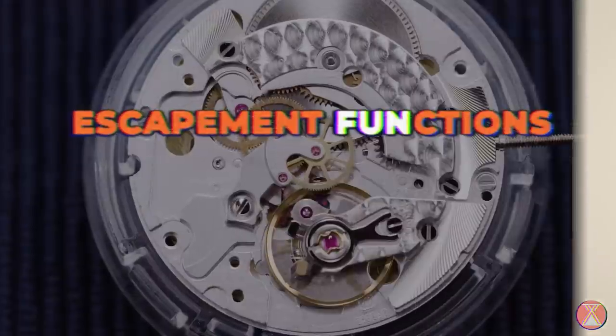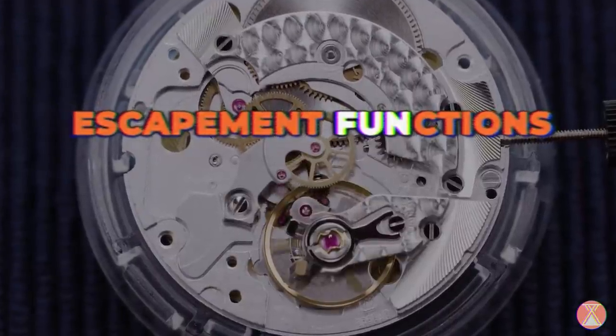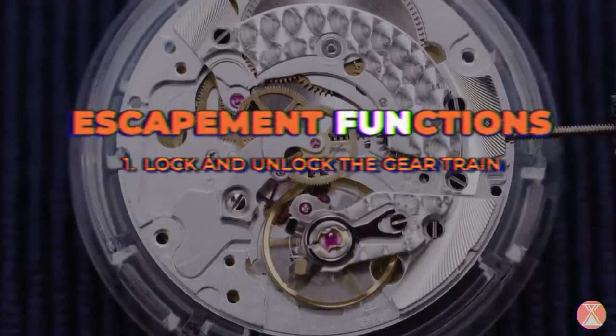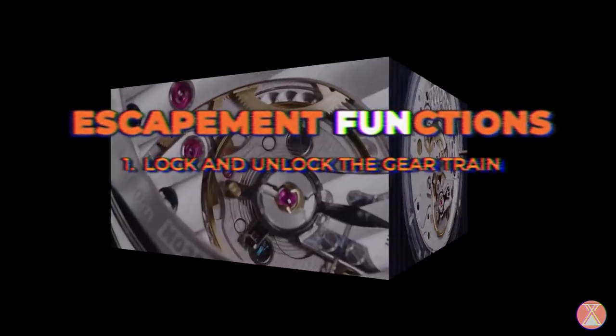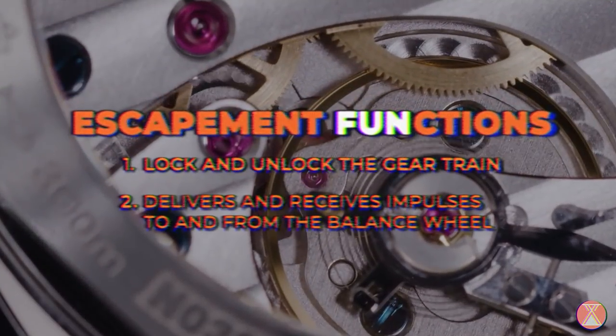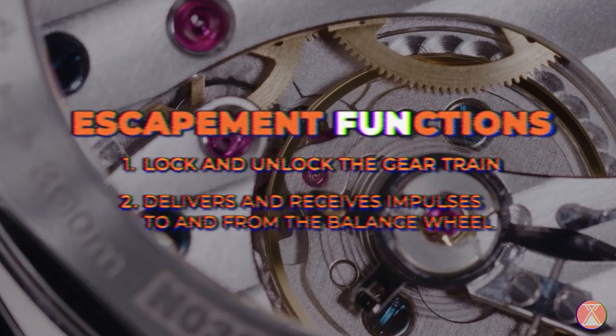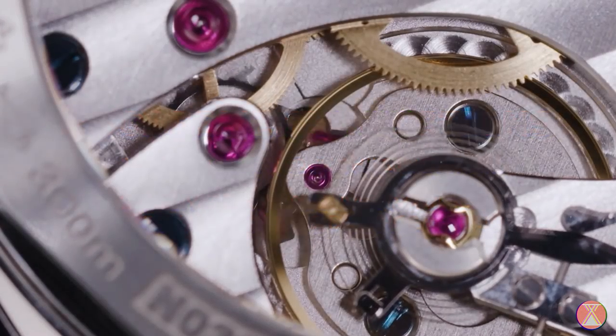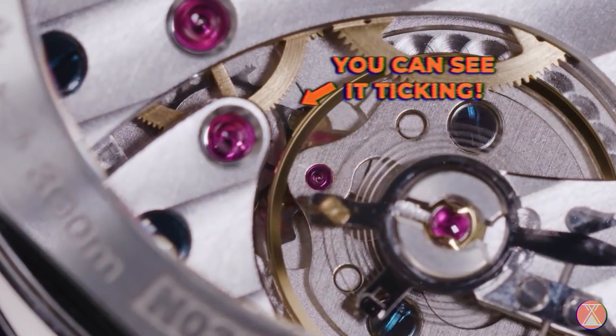You see, the escapement of any watch has two main functions and that is to lock and unlock the gear train, and it's also to deliver and receive the impulses from the balance wheel to let that little bit of power escape for your watch to tick.